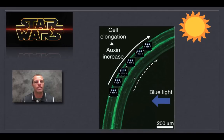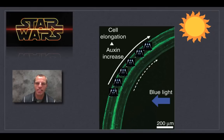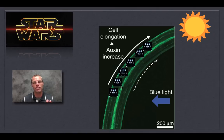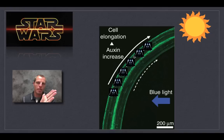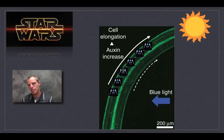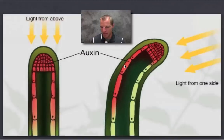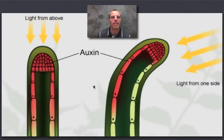By auxin moving to the dark side of the plant, it causes all the cells on the dark side to elongate. When the cells on the dark side elongate, it bends the plant towards the Sun — towards the light stimulus.